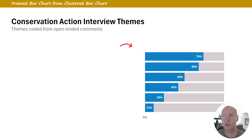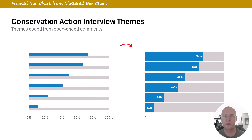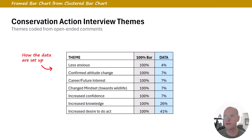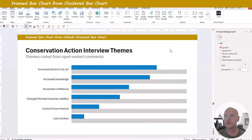Here we're going to make a framed bar chart — in this case, visualizing themes from conservation action interviews done at the zoo. We're going to make this from a clustered bar chart, which is the default in PowerPoint or Excel. This is how the data would be set up in your Excel sheet: you'd normally have your themes and data in one column, but here we need to add a helper column — Anne Emery calls these 'helper columns,' and I love that terminology.